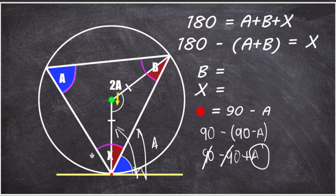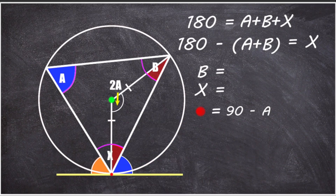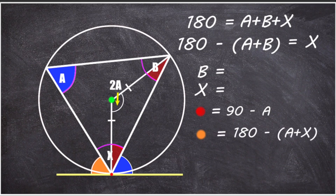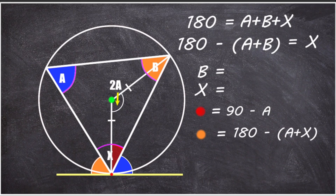We're halfway there. The angle between the left chord and the tangent is relatively simple to find. The tangent line is a straight line, so the sum of angles across it is 180 degrees. We already know two of these angles: the blue angle equals a, and the middle angle is x. So the orange angle must equal 180 minus (a plus x). Looking at the large triangle, whose angles sum to 180, subtracting a and x gives b. So the angle between the left chord and the tangent is b, the same as the value in the alternate segment.